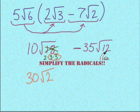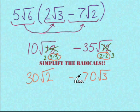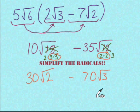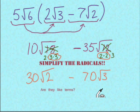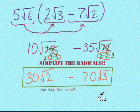Now simplify radical 12: the prime factors are 2, 2, and 3 — a pair of 2s. We bring one 2 out of the radical to multiply the negative 35, giving us negative 70, with 3 left over inside the radical — so negative 35 radical 12 simplifies to negative 70 radical 3. Next question: are they like terms? The first term has radical 2, the second has radical 3 — they're not like terms. So we know we are finished, and there's our answer.